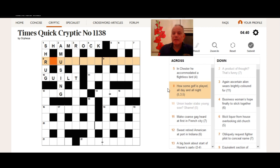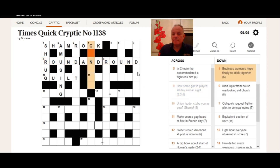How some golf is played all day and all night. Well, that does look like round and round, I guess. How some golf is played. Certainly round. I guess that's round and round. It's kind of referring to some continuous golf. Let's just have a look at four down, see if that confirms that we've got the right phrase there. Businesswoman's hope finally to stick together. Oh, no. Well, I've got round and round wrong.